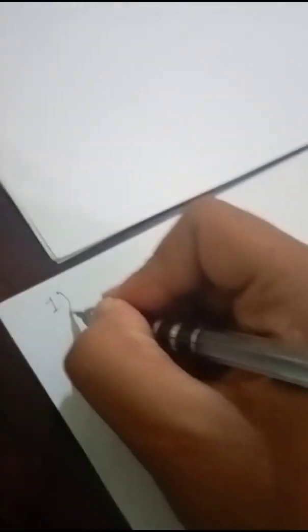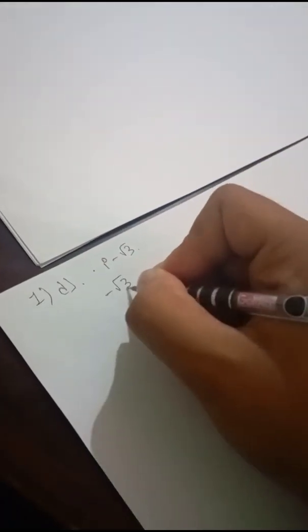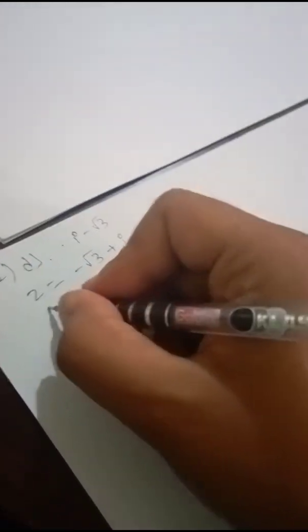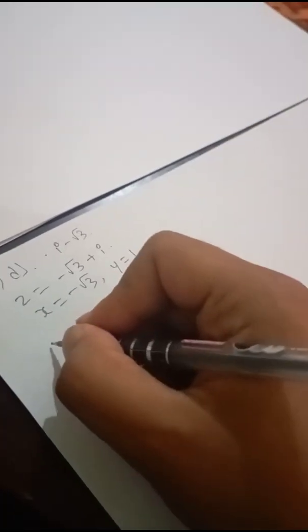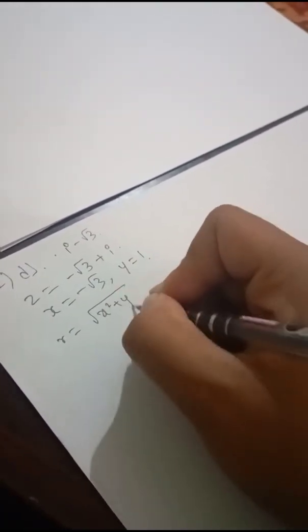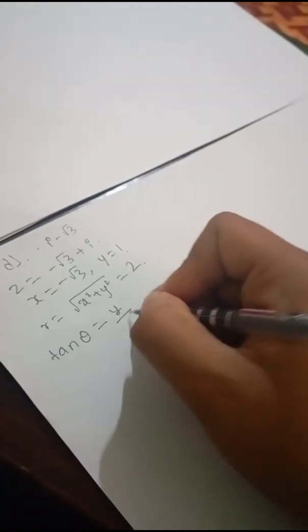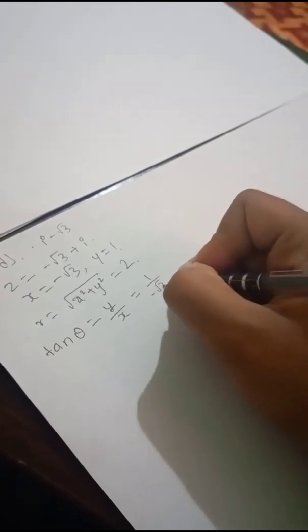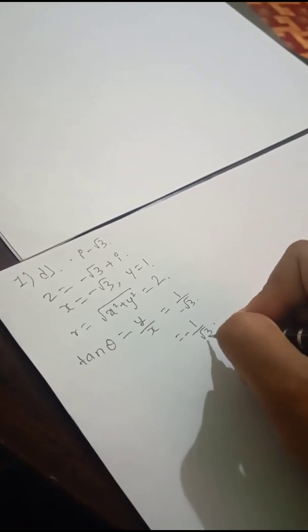Number D: z equals i minus root 3, which is minus root 3 plus i. So x is minus root 3 and y is 1. R is root under x squared plus y squared, which equals 2. Tan theta equals y by x, which is 1 over minus root 3.